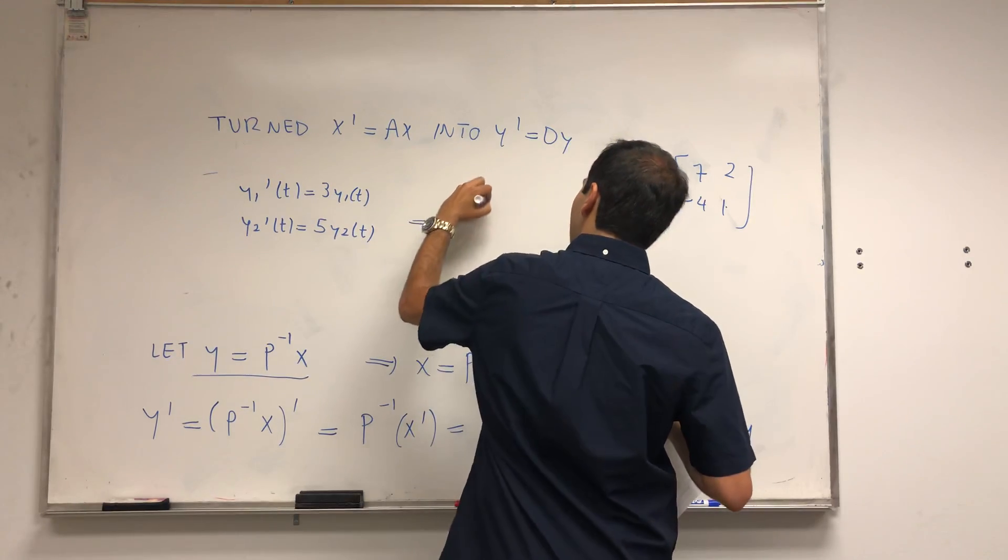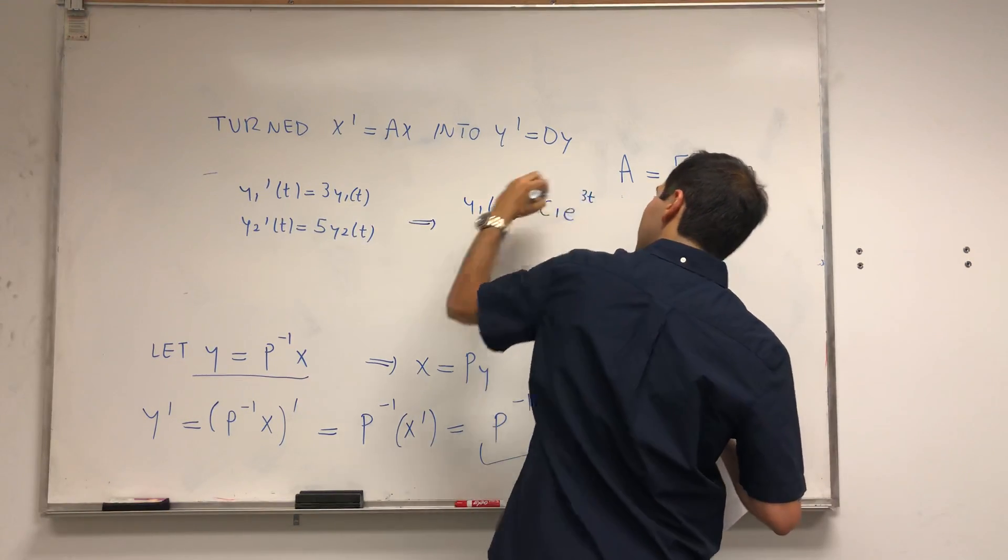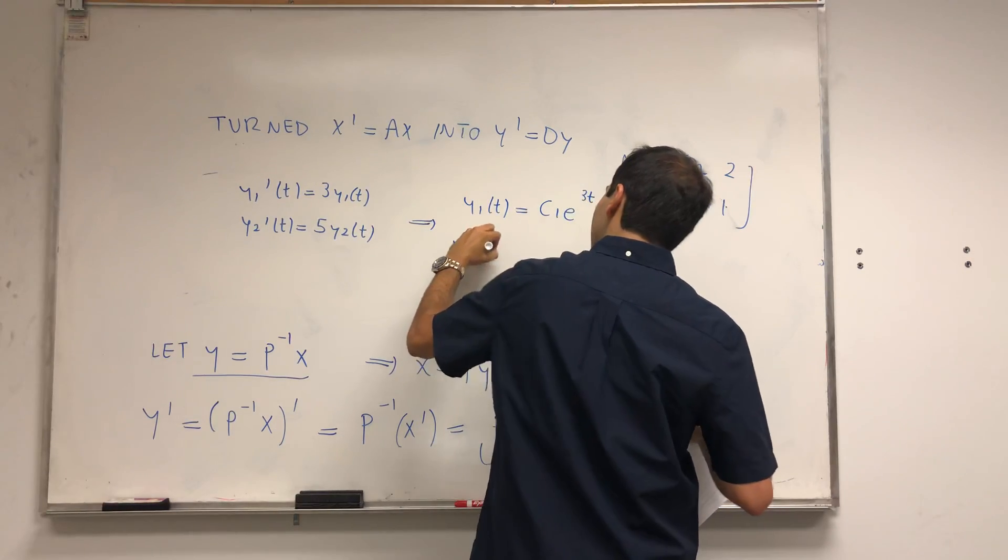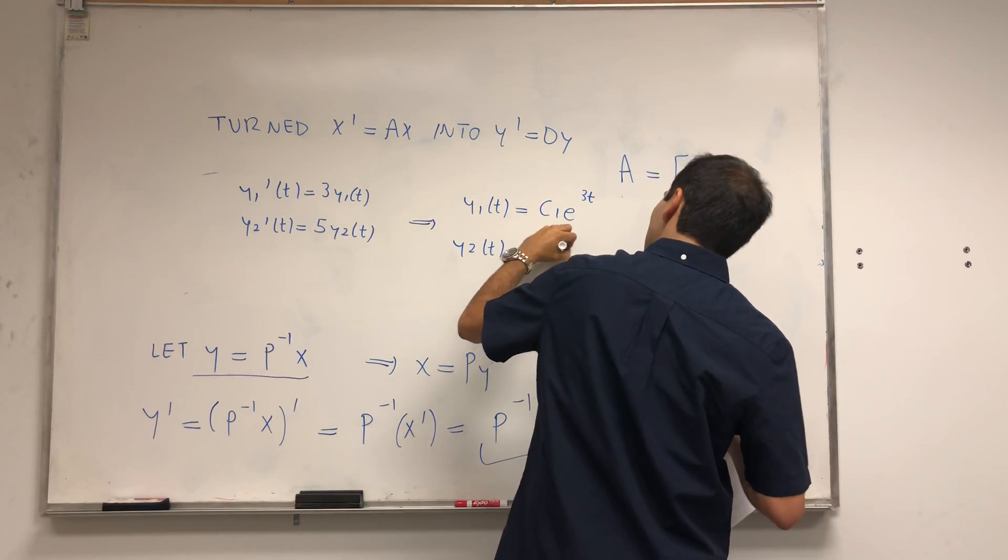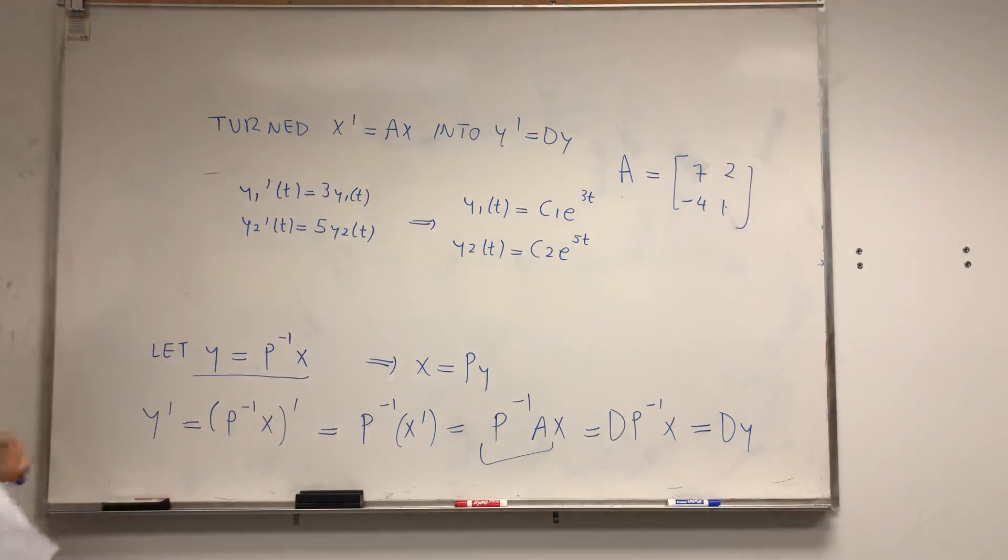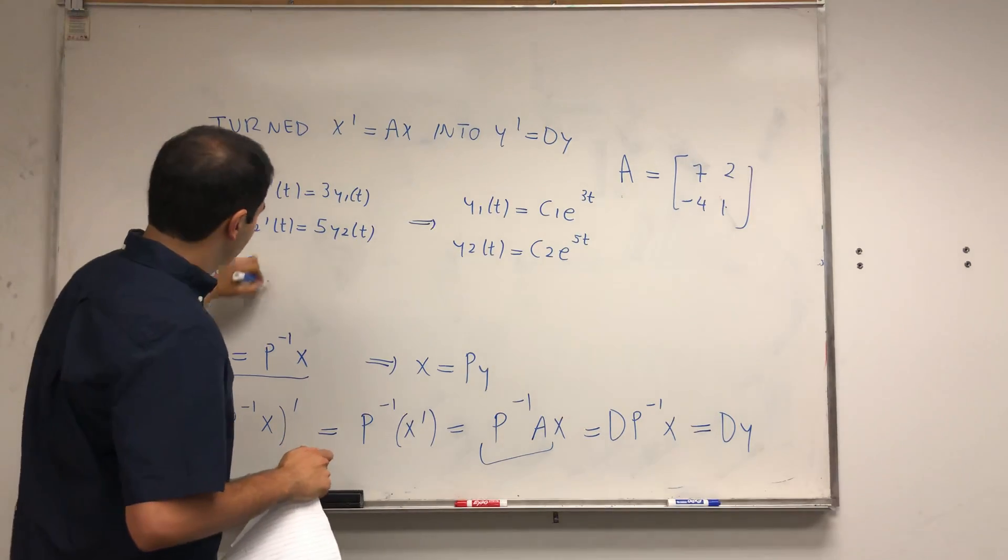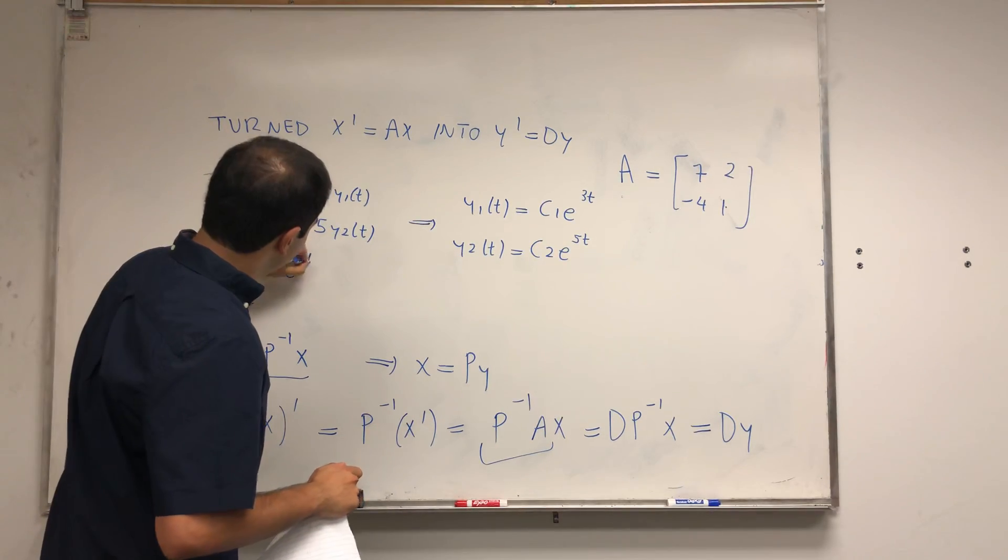Again, y1 of t is c1 e to the 3t, and y2 of t is c2 e to the 5t. So this gives us our vector y. If you want, y of t is [c1 e to the 3t, c2 e to the 5t].